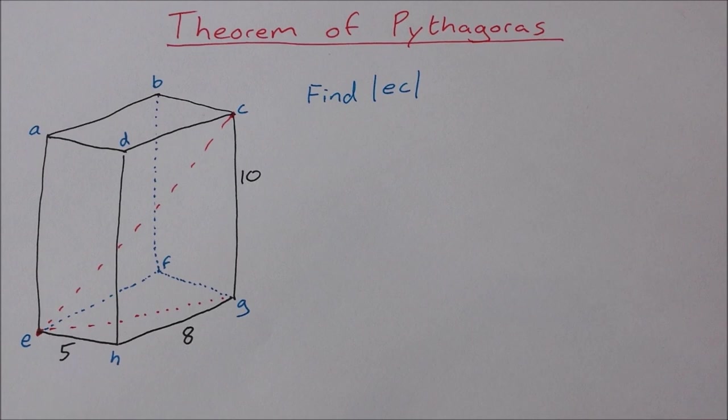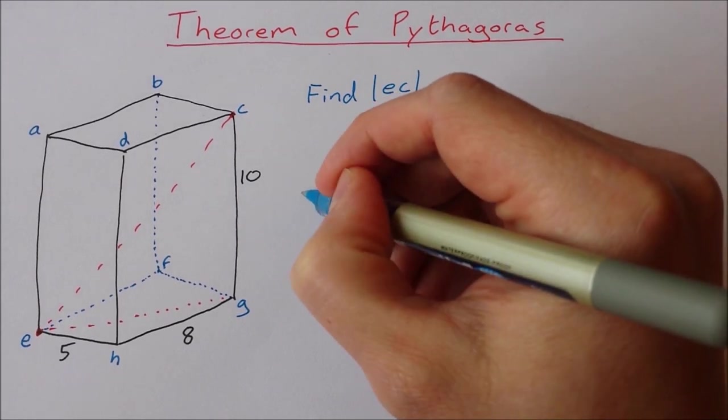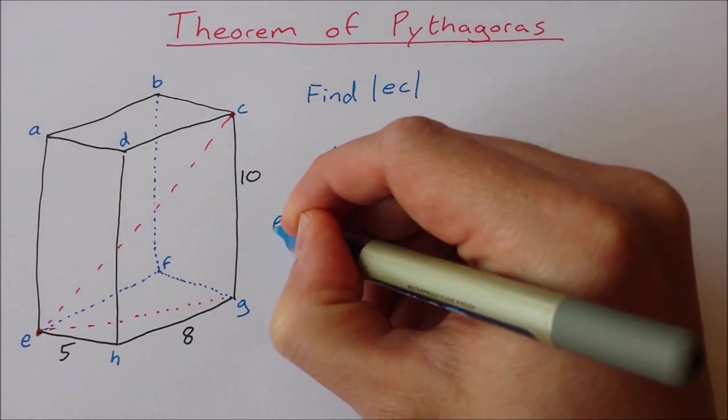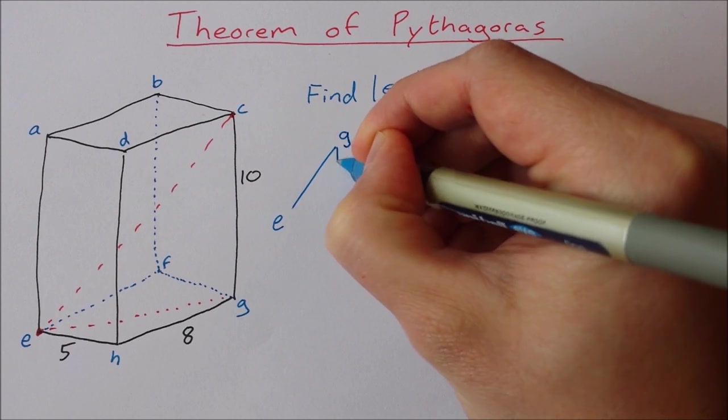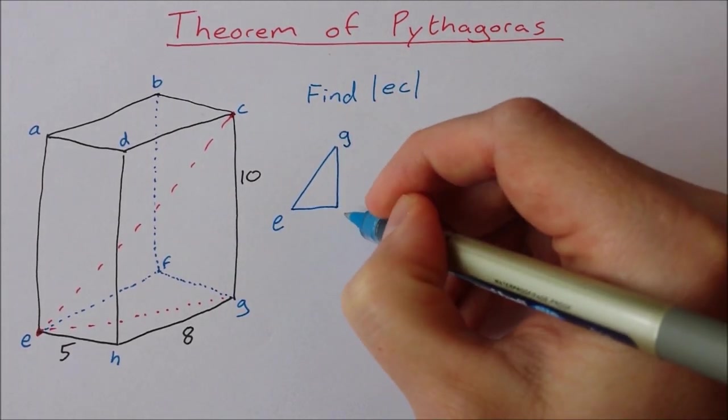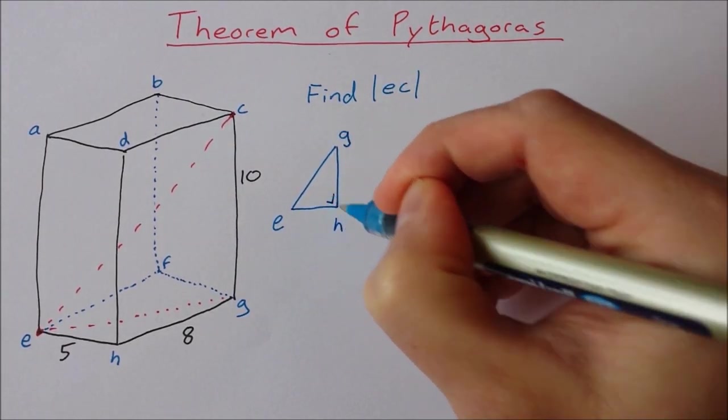Okay, so let's calculate the length of EG. First I'm going to sketch what this triangle looks like. So I have EGH. And this is a right angle.